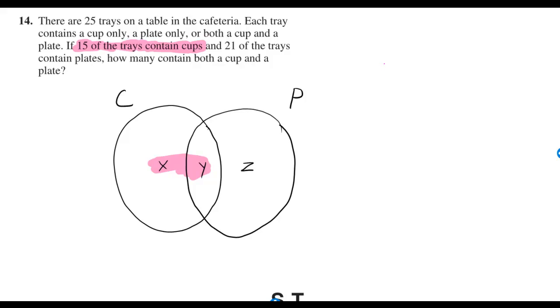It tells us 15 of the trays contain cups. The trays that contain cups only, and the trays that contain cups and plates also contain cups. If I add up those two sections, it must be 15.